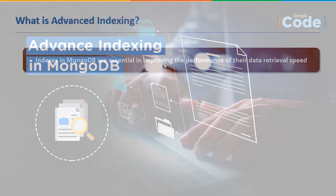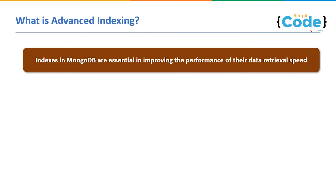So what is advanced indexing? We all know what indexing is in MongoDB — it's an essential component which improves the performance of the data retrieval speed in the database. MongoDB indexing is a special data structure where the index is created to hold the data of specific fields of documents. In the absence of indexing, there is a need to scan every collection document to select those that match the query statement.